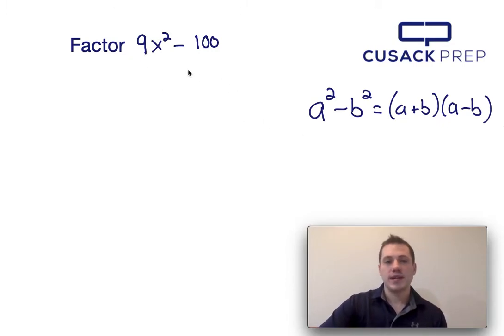Now what I have to do is recognize that a squared and 9x squared are in the same position. So if a squared equals 9x squared, then a would be 3x, just the square root of 9x squared. If b squared is 100, then b would be 10, just the square root of 100.